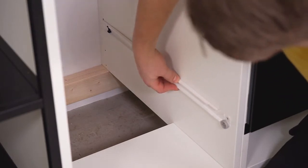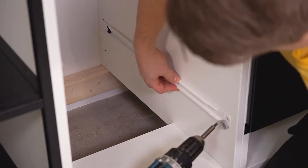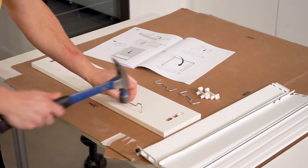Install the rails on the side of the cabinet. Now put on the drawer fronts.